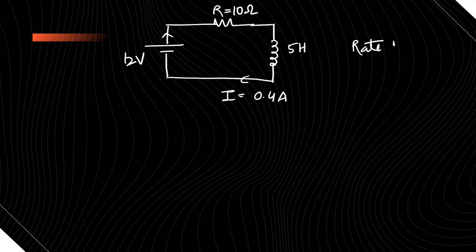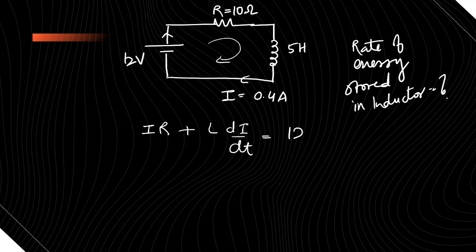We have to find out this rate, so let's write the voltage equation. We are using Kirchhoff's loop rule, so the voltage drop across the resistor is IR and the voltage drop across this is L di by dt, which is equal to 12 volt of battery. So this is our voltage equation.